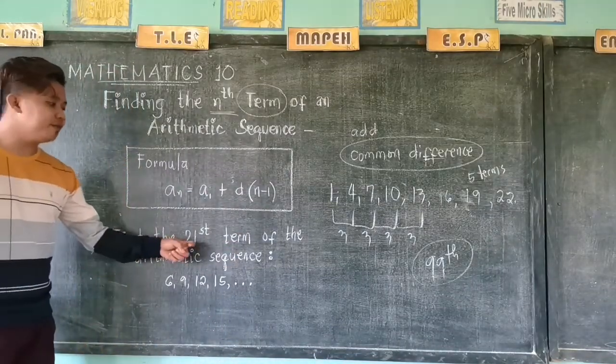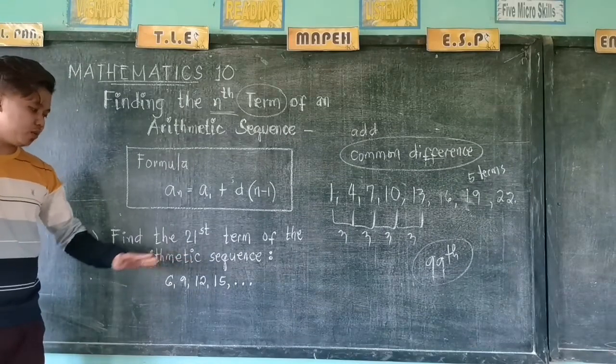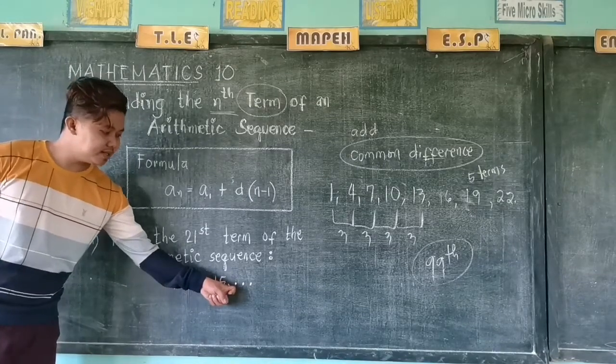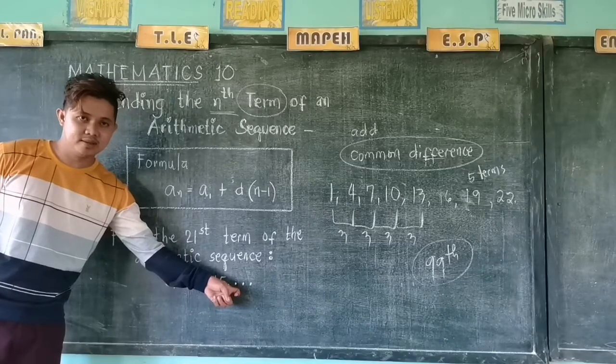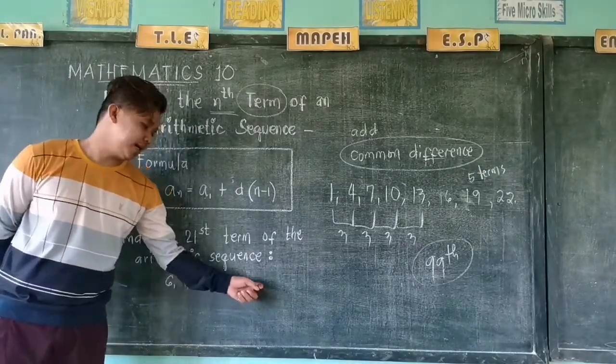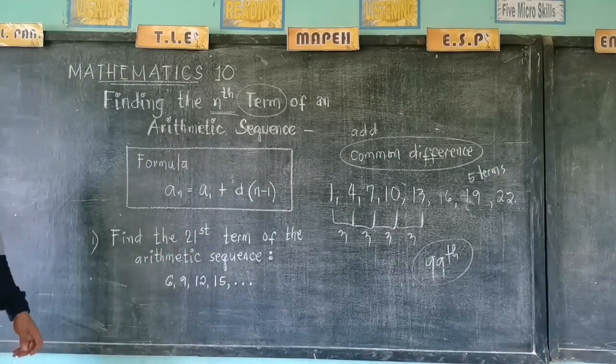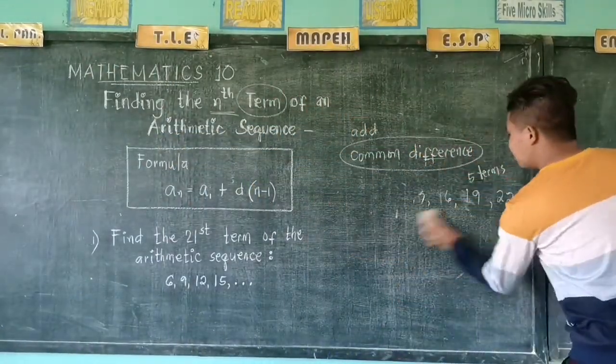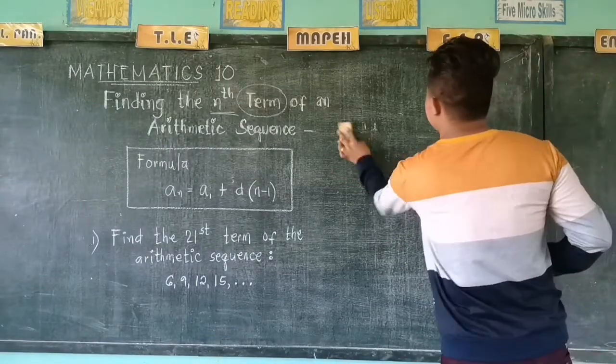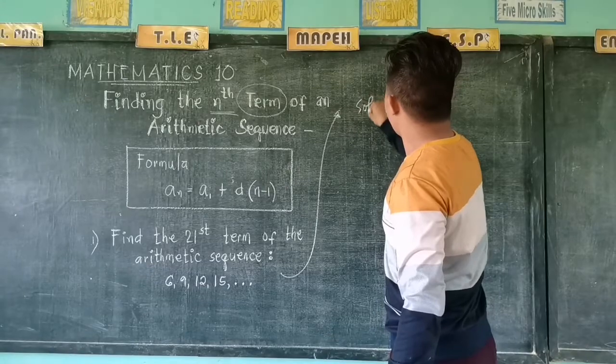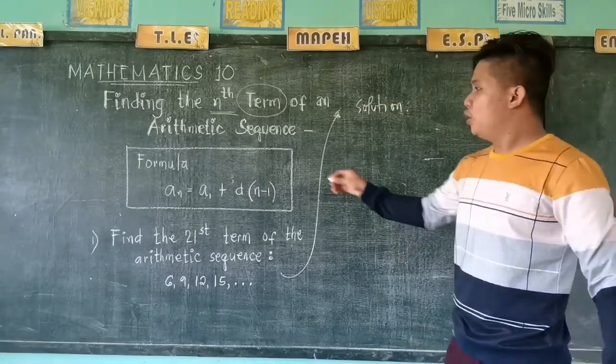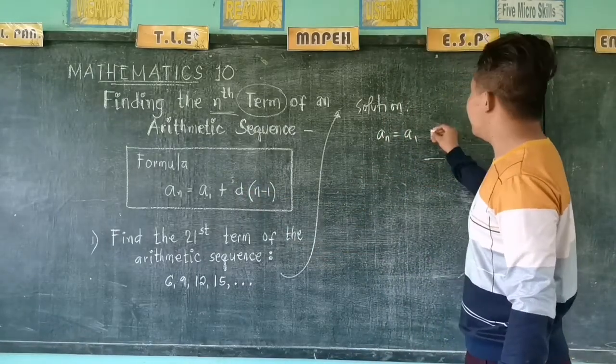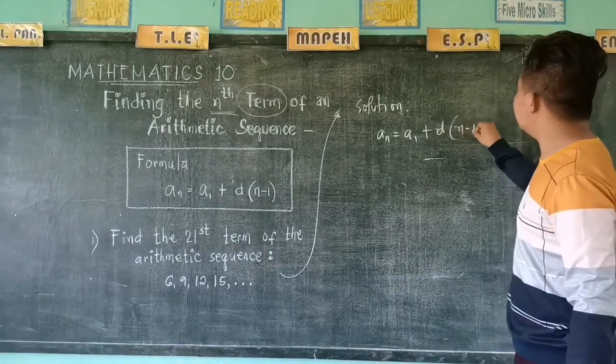Example: Find the 21st term of the arithmetic sequence 6, 9, 12, 15... and that is 3 dots, that is ellipses. It tells you that there is something more in here. Let's find the 21st term. Using the formula, we will simply use the formula: a_n equals a_1 plus d times the quantity n minus 1.